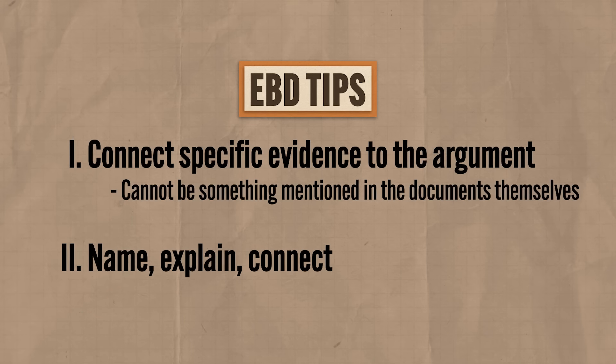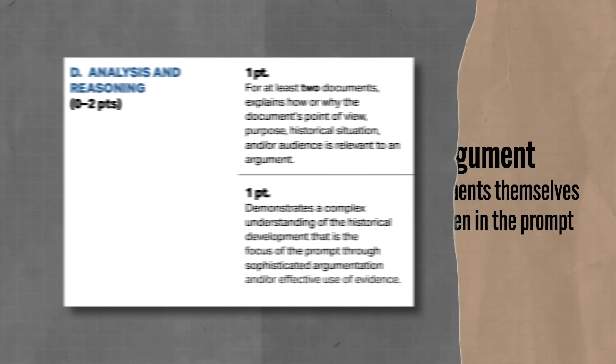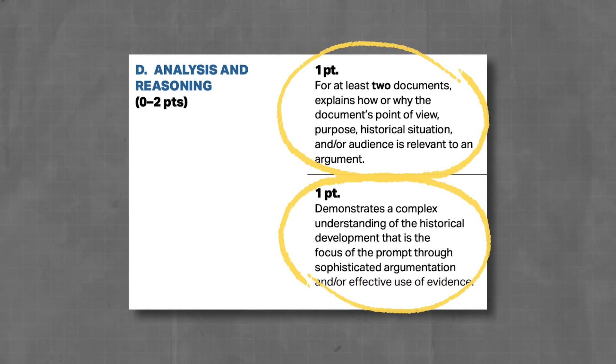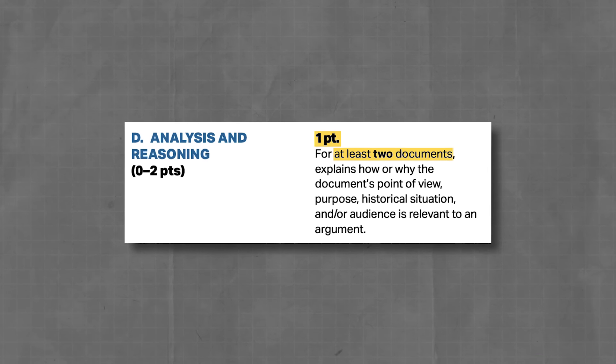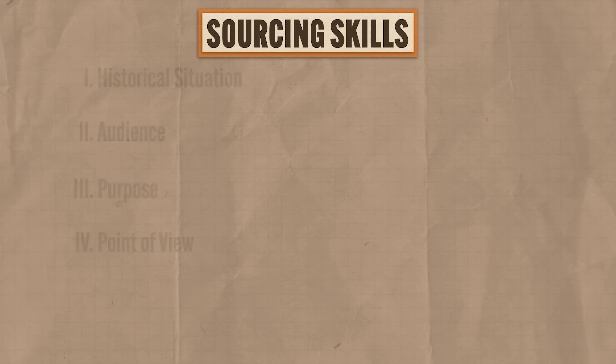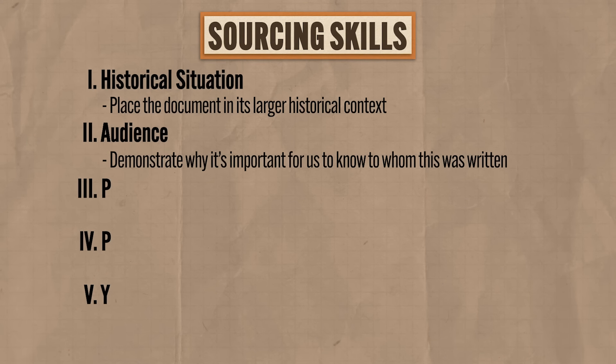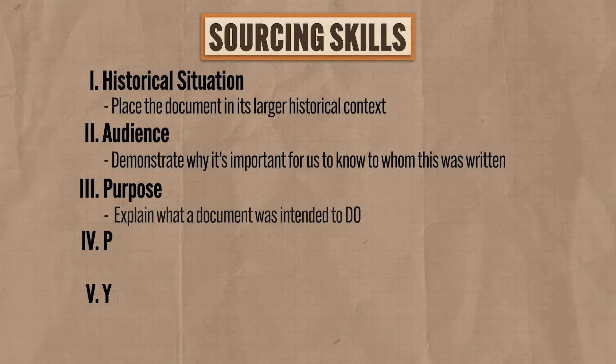There's no specific place you need to put evidence beyond the documents — just stick it wherever it's relevant. The general rule of thumb is that your outside evidence needs to come from the same time period given in the prompt. The last section of the rubric is for analysis and reasoning, where you can earn up to two points. The first point is for sourcing documents — you can earn one point for sourcing at least two documents. To source a document means you show how a document's historical situation, audience, purpose, or point of view is relevant to the interpretation of the document. The acronym is HAPP-Y.